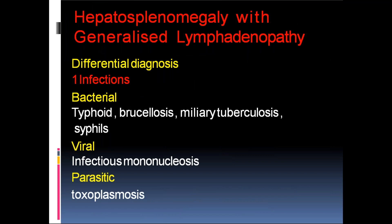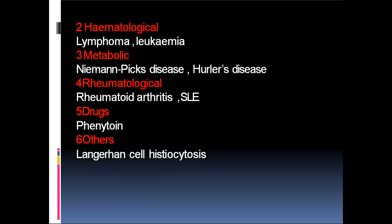Hepatosplenomegaly with generalized lymphadenopathy — differential diagnoses: infections — bacterial: typhoid, brucellosis, miliary tuberculosis, syphilis; viral: infectious mononucleosis; parasitic: toxoplasmosis. Hematological causes: lymphoma and leukemia. Metabolic causes: Niemann-Pick disease, Hurler's disease. Rheumatological: rheumatoid arthritis, SLE. Drugs: phenytoin. Others: Langerhans cell histiocytosis.